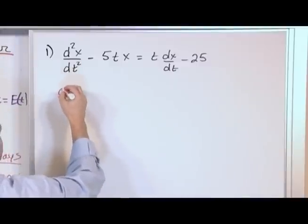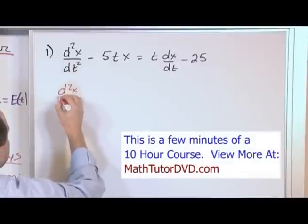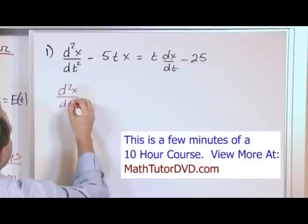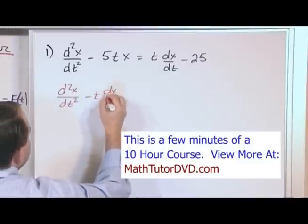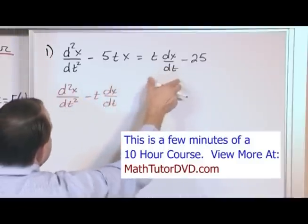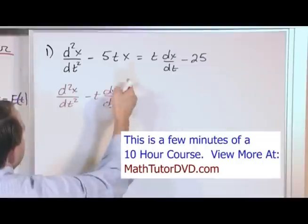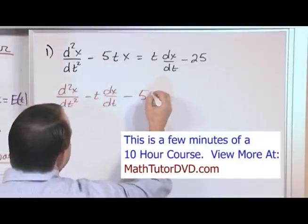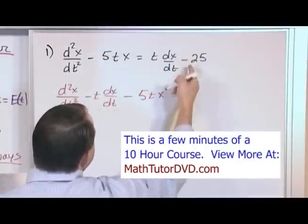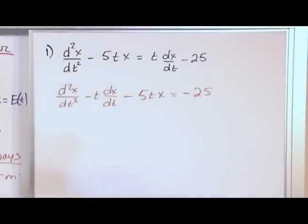So what I'm going to do when I do that is d second derivative of x with respect to time, minus t dx dt, just pulling this guy over with a minus sign. This guy stays the same, 5 times t times x, and I'm going to leave for now the negative 25 over on the right-hand side.